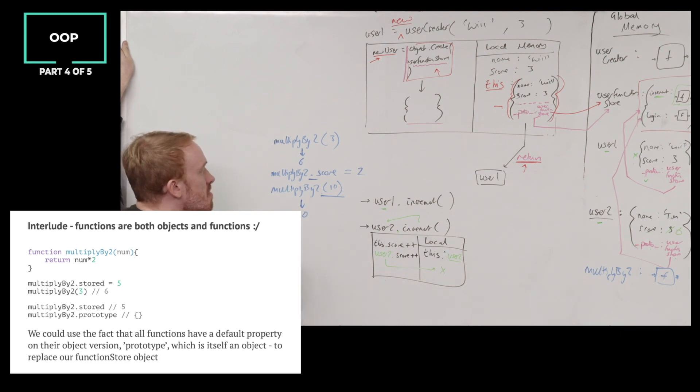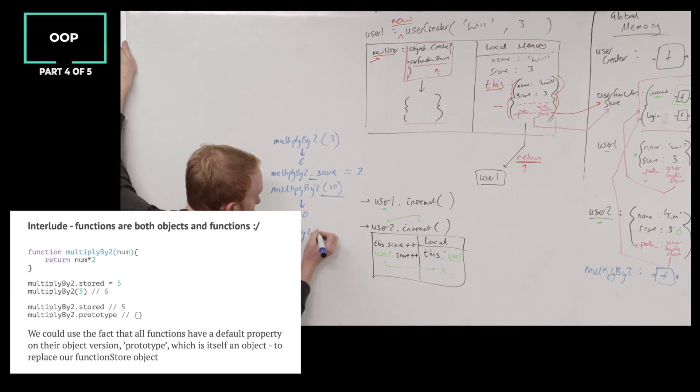You can think of this, some people think of this as multiply by 2 is really always just an object, but with a special ability, a special ability to be called, or if it's essentially running its call property.